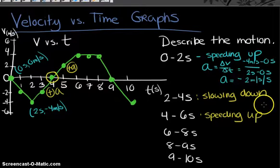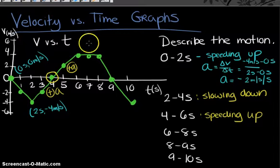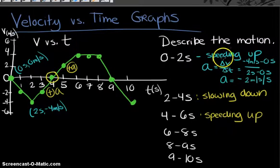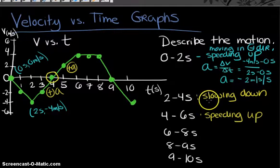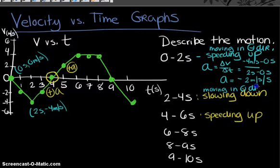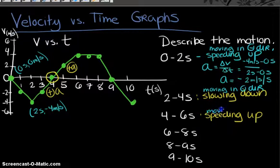Since this is a velocity versus time graph, we also know the direction of motion. From zero to two seconds, the object is speeding up and moving in the negative direction. From two to four seconds, the object is still moving in the negative direction. From four to six seconds, the object is moving in the positive direction.